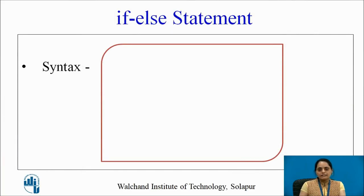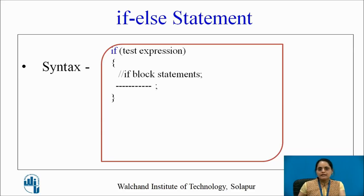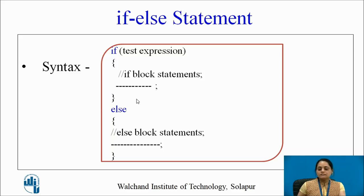Moving ahead into technical details: how do we write if-else in C? According to the syntax, the keyword if is followed by a test expression in round brackets, and if it is true the statements to be executed are enclosed within curly brackets. The statements to be executed if the condition evaluates to false are included within the else block. Note that if and else are both keywords from the C language.